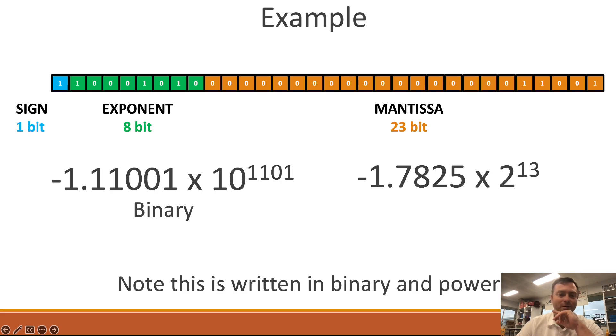So the mantissa 11001 is down here and then the exponent even though it's got this, it looks somewhat similar if you just look at the back end here. So it's got 1101.